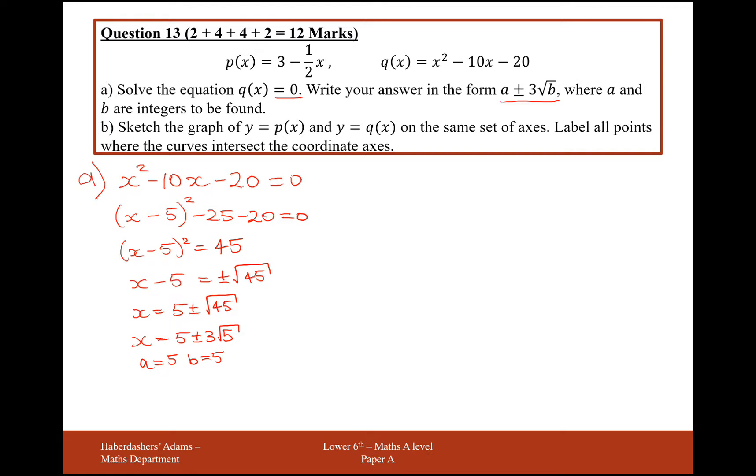So part b is now to sketch the graphs of y equals p of x and y equals q of x. Sketching graphs, if it's a sketching graphs question, make sure you always give yourself lots of space and make sure everything as far as possible is to scale. So y-axis, x-axis, and the first thing we need to do is label all the points of intersection of our graphs. Let's look at the first one, so it's going to be a straight line because there's no squared in it, it's going to be negative gradient because it's negative a half, and it's going to start at 3.